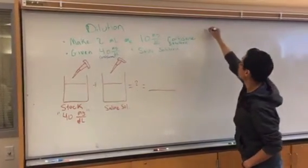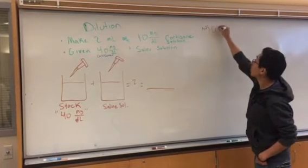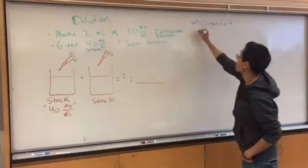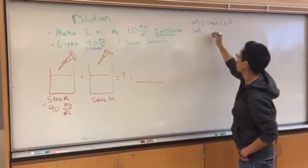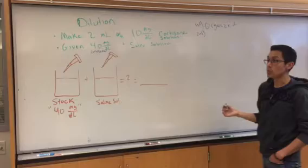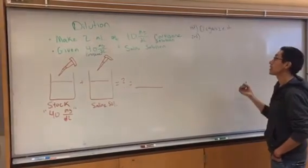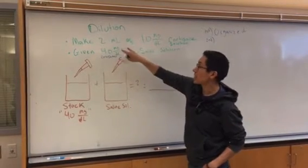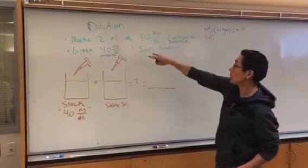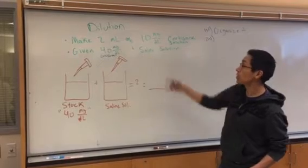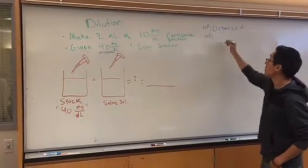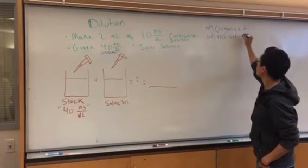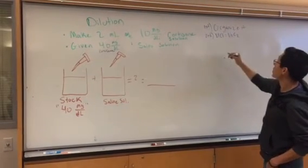So the first step will be, let's organize it, and then the second step will be, it's usually V1C1 equals C2V2, but because of the way we say it, the two milliliters of a certain solution, I start off with V1C1 equals V2C2, and it'll make more sense in a second.